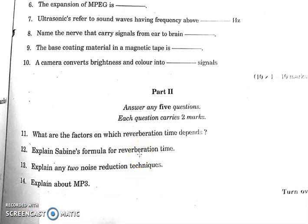Then Part 2, two-mark questions. First: what are the factors on which reverberation time depends? That is the Sabine's formula: reverberation time T equals 55.3V divided by AC. The parameters are: V equals volume of the room, A equals total absorption, C equals velocity of sound. Three parameters are absorption, velocity of sound, and volume of the room. Then explain any two noise reduction techniques — one answer is MP3.